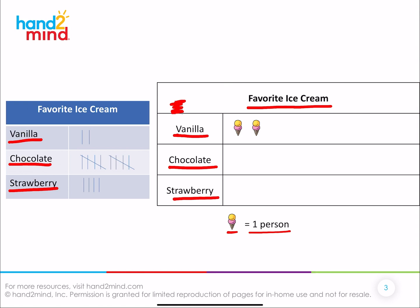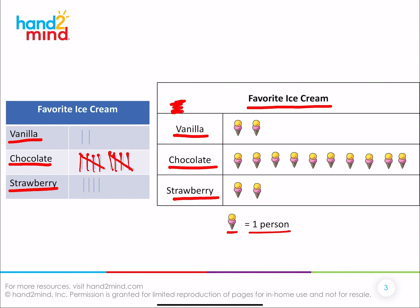How many people liked chocolate ice cream? What does this mean right here — do you remember what that means when you have tally marks grouped like this? That means a group of five. So you have two groups of five, and how much is that? Ten. So one, two, three, four, five, six, seven, eight, nine, ten. Good job. What about strawberry? Four — one, two, three, four.